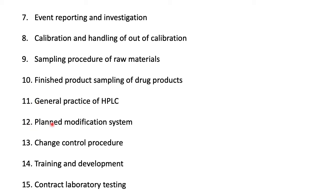Then comes the planned modification system, where suitable planning will be required to modify certain experiments wherever necessary. There must also be a control over changes, as frequent changes are not always advised in a quality assurance laboratory. If frequent changes are carried out, quality cannot be assured in the first place, so there is a particular procedure for change control.